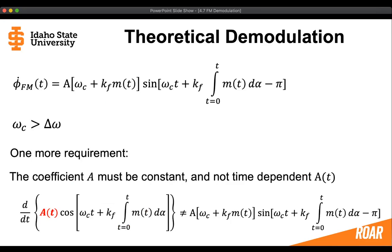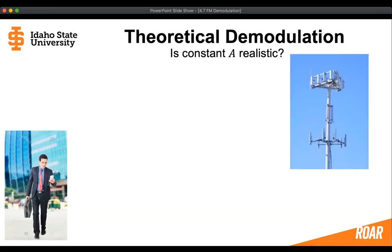There is one more requirement to consider: the coefficient A must always be constant and not a time-dependent signal. Is this really possible? Consider a man walking through a central business district using his cell phone and trying to connect to a cell tower. When he starts out walking, he has some direct line of sight to a cell phone tower, giving some constant A1.